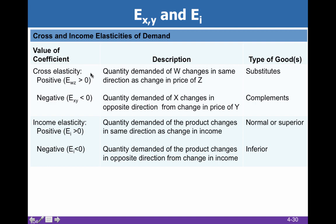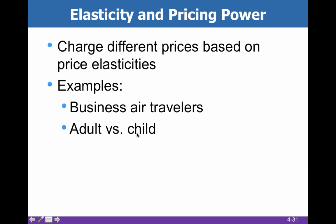There's a chart that puts these relatively complicated ideas of cross price elasticity and income elasticity into a nice chart form. Elasticity and pricing power is an interesting idea. When you go to the movies, why do adults, children, and senior citizens pay different amounts? The idea is elasticity — children pay lower amounts because parents can easily tell them not to go.